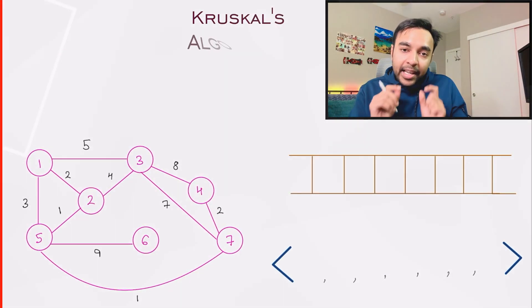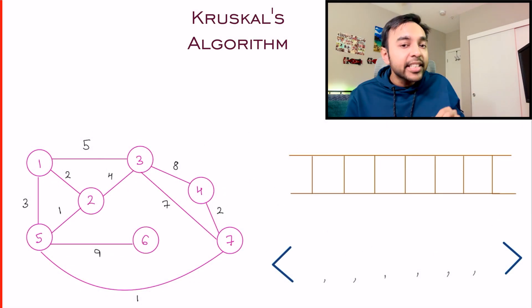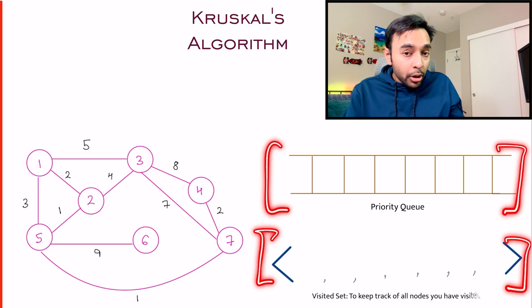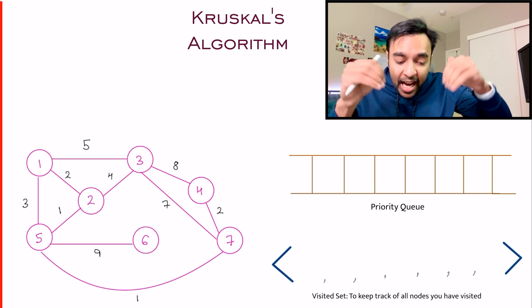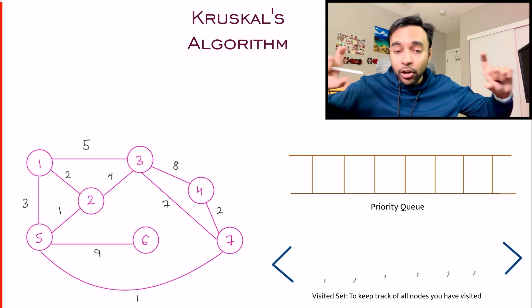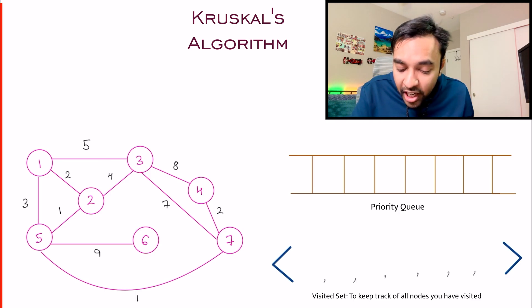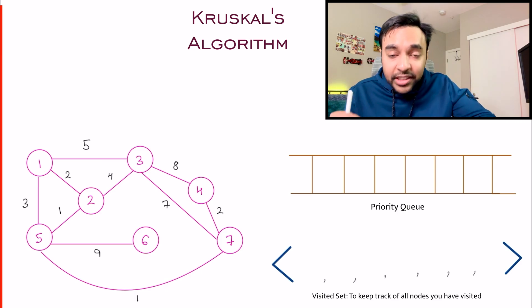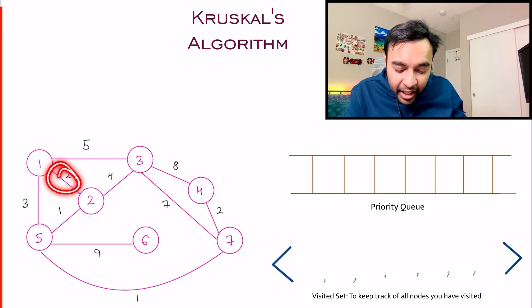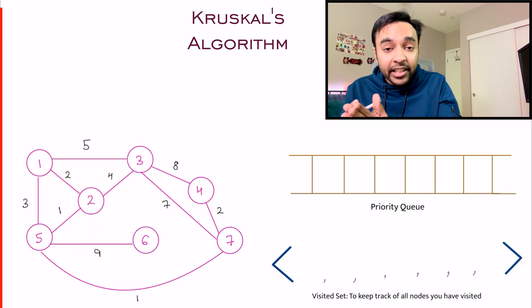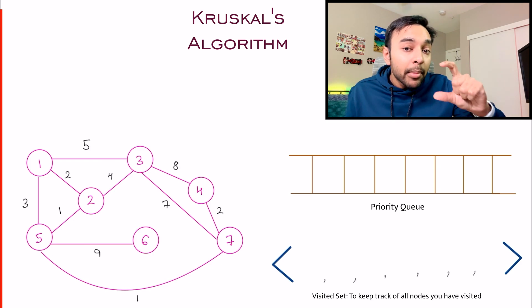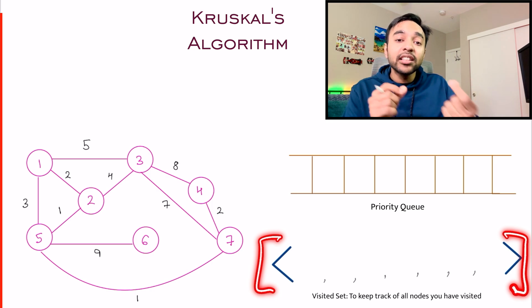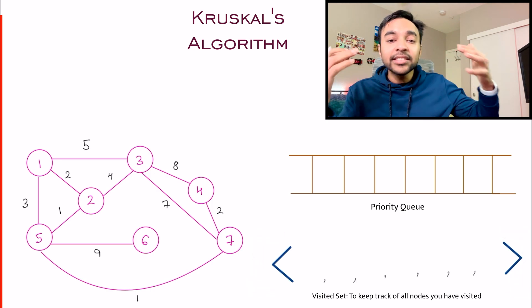We will take the help of two data structures. One is a priority queue and one is a set. In a priority queue, when you are adding elements they get sorted in ascending order automatically. This guarantees that whenever you pop out an element from the queue you will always get the minimum element. We will utilize this priority queue to store all of our edges, and we use the set to keep track of the nodes that we have already covered.